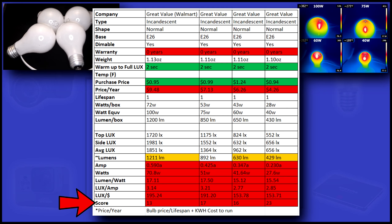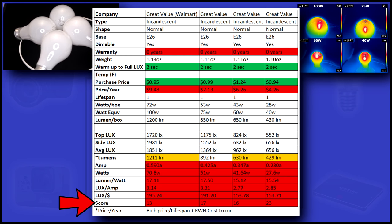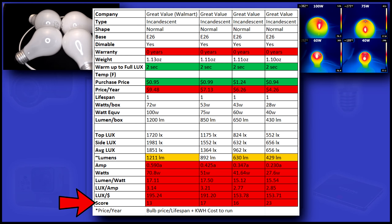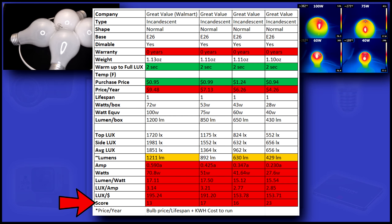The average score for all the bulbs I've tested is around 150. With these bulbs scoring in the teens, they barely even make the list.